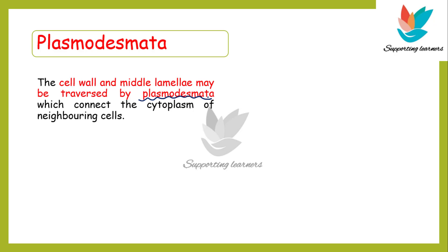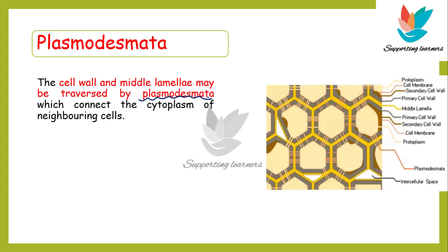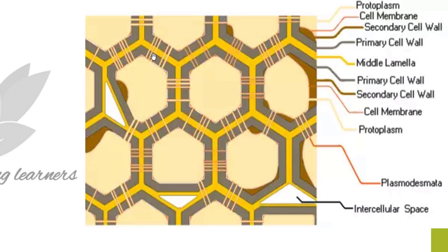Let's understand this line through this diagram. The yellow colored layer visible here is the layer of middle lamella, and the grey colored layer you can see is the layer of the primary cell wall. These are the depositions of secondary cell wall and this is the protoplasm of the cell. And this structure here — this is plasmodesmata.